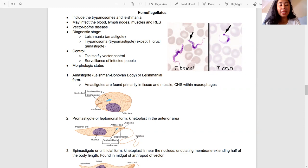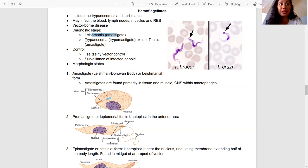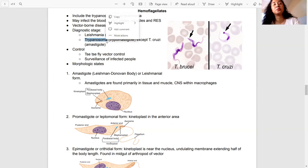This hemoflagellates class are commonly transmitted through vector. But recent studies show that some of our hemoflagellates could be transmitted by transfusion, by organ transplantation, from vertical transmission - from mother to the newborn baby. The diagnostic stage of these diseases: for Leishmania, it's amastigote. For trypanosoma, that's why they're called trypanosoma, the diagnostic stage is trypomastigotes.